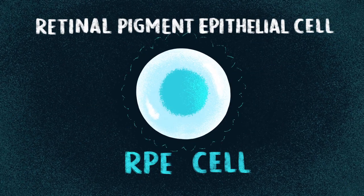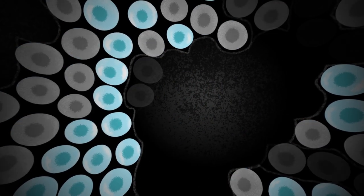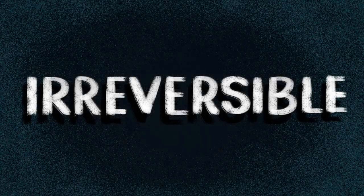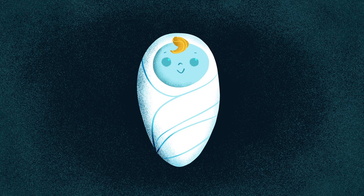RPE cells are necessary for vision. As the wounds grow bigger, more and more vision is lost. AMD progression is irreversible because the eye stops generating new RPE cells once you are born.